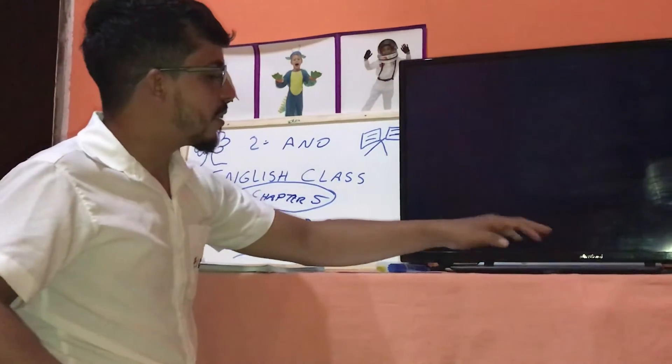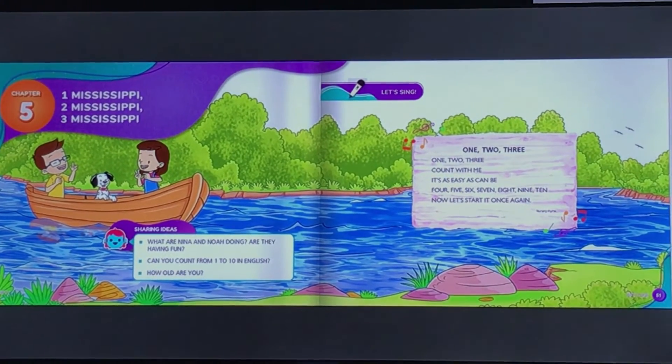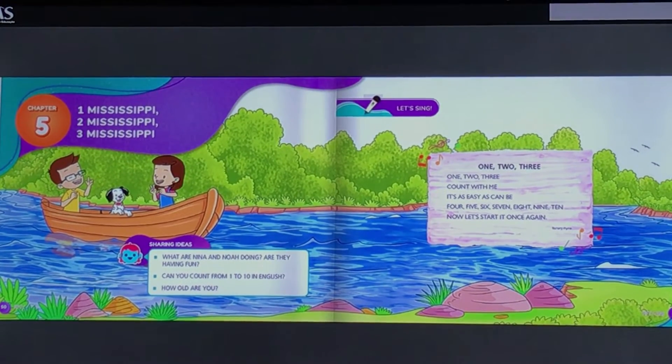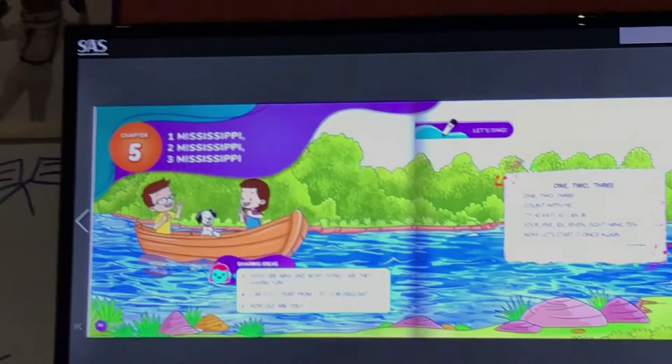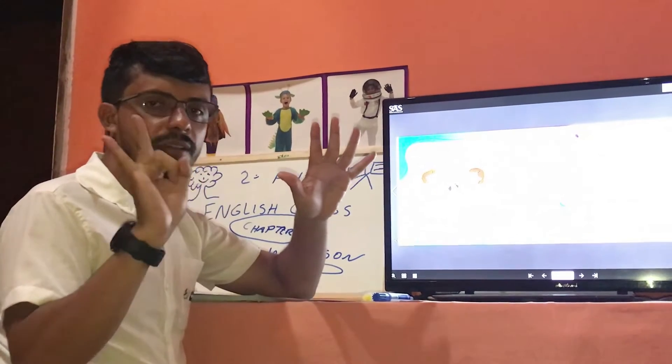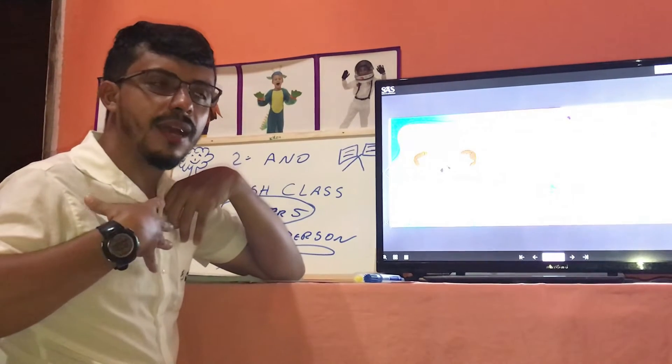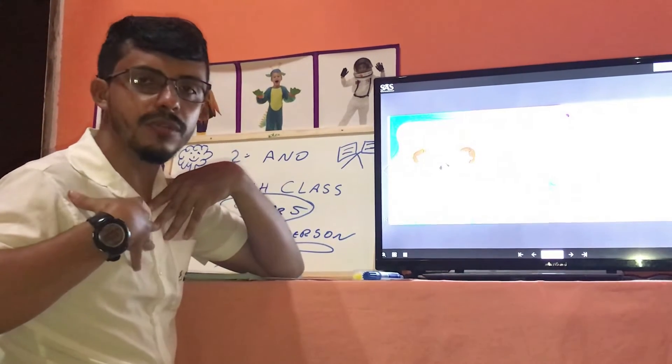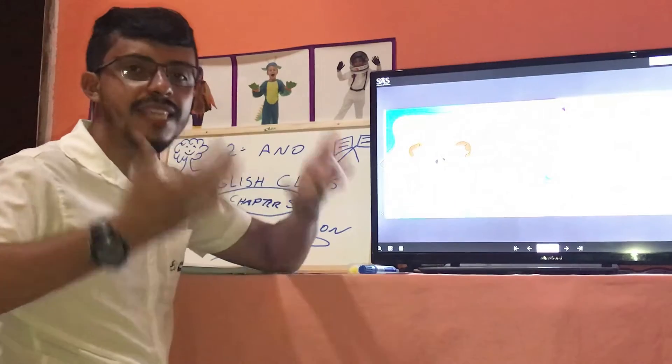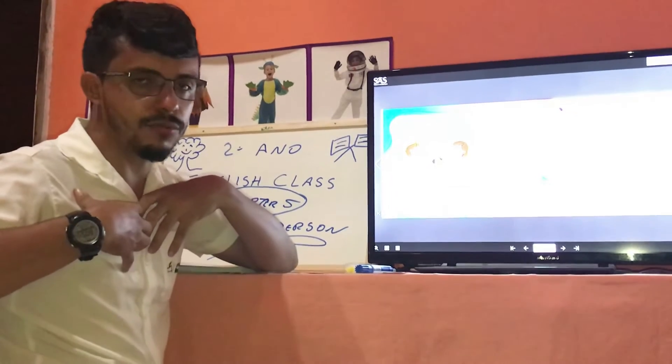Aqui tem uma pergunta para vocês. Diz assim, how old are you? Quão velho é você? Quanta idade tem você? Qual é a sua idade em português? Então a gente vai contar também nos dedos. Let's count with me. One, two, three, four, five, six, seven. Vamos supor que vocês têm sete anos. Então vocês vão dizer I am seven years old. Eu estou sete anos mais velho. Sete anos de idade. Mas pode ser que você tenha só seis. Então você vai dizer I am six years old.